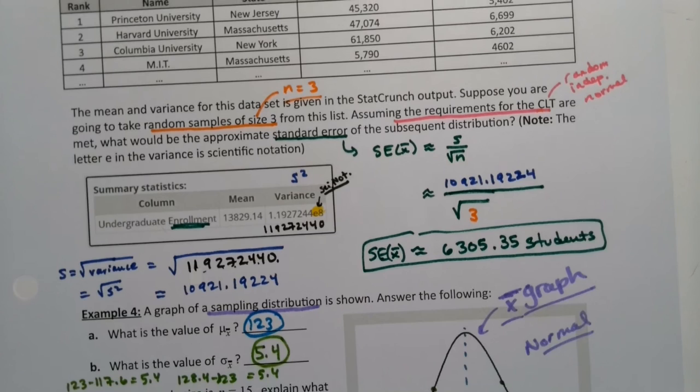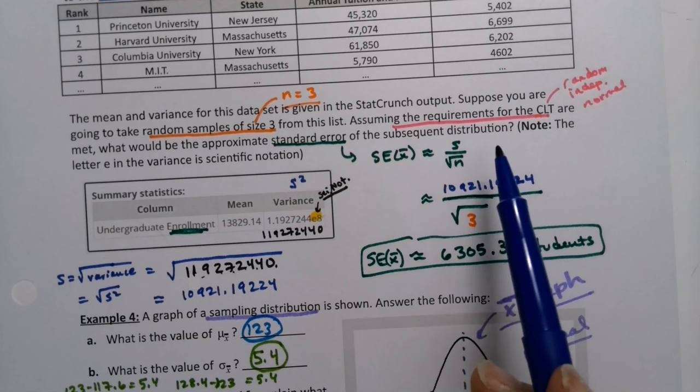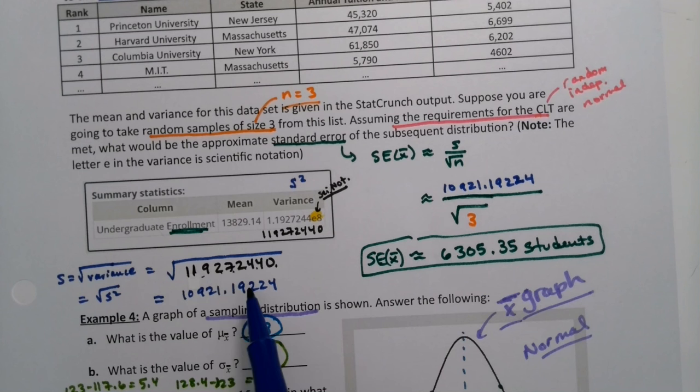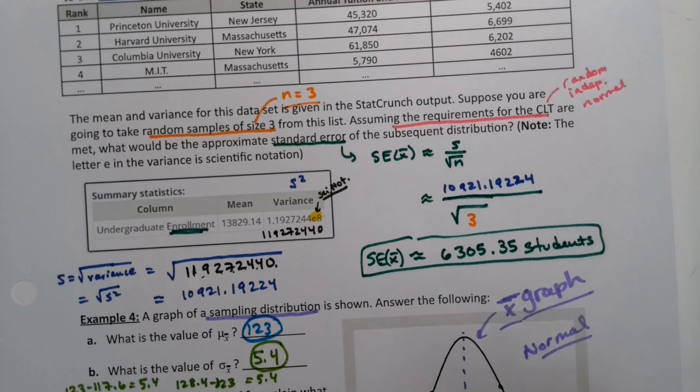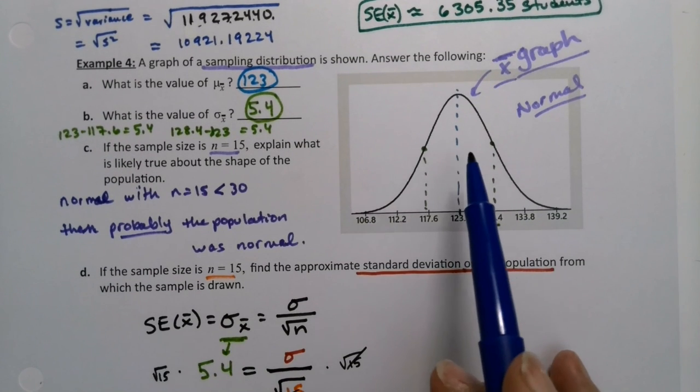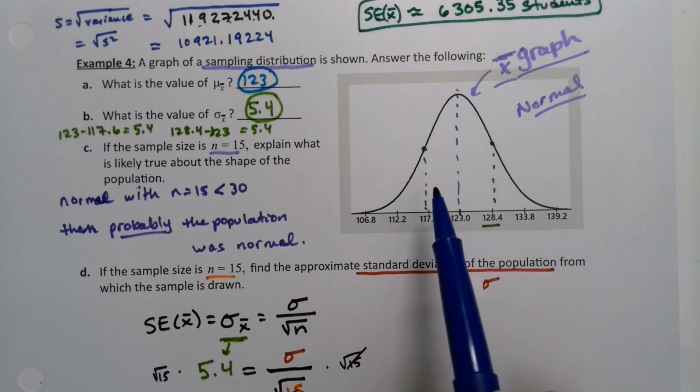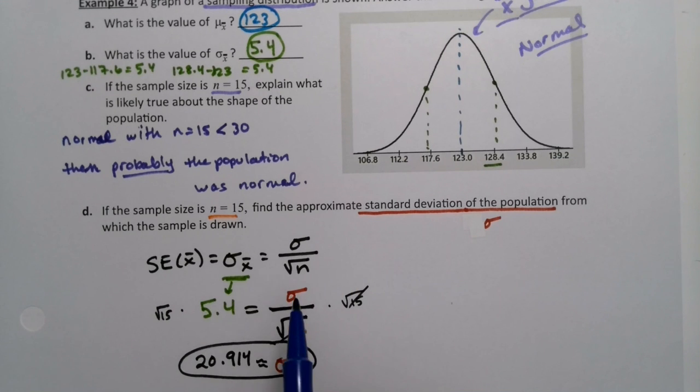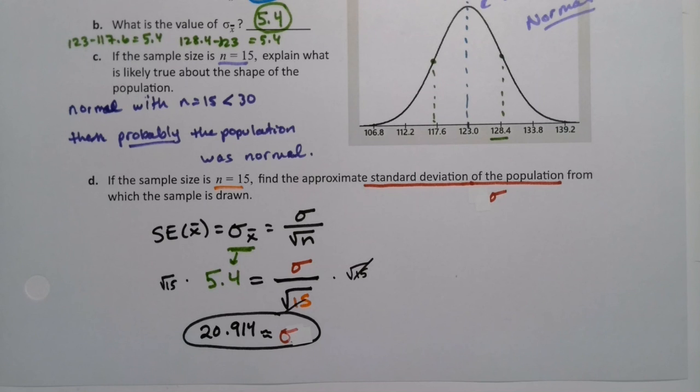But these two examples tie together because this particular one has us using that standard error formula in kind of a forwards direction. We figure out s, then we plug it in. It just took us a minute to figure out s because we had to remember something from chapter three. But if they gave us s, then we could just stick it in. This one kind of goes backwards. We figure out the standard error part first, that 5.4 first, based on what we know about the empirical rule and the graph. And then we figured out the sample size because they gave it to us. And then we solved for sigma, it kind of goes backwards. Same formula, but being used two different ways.